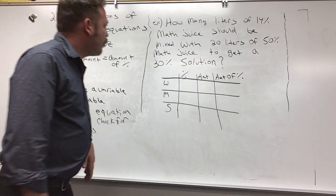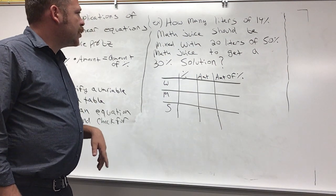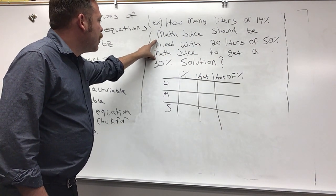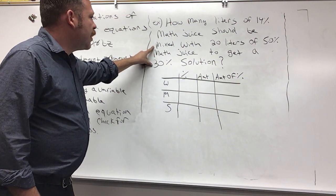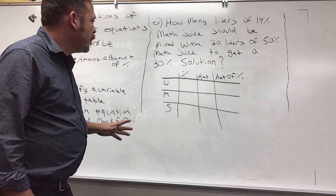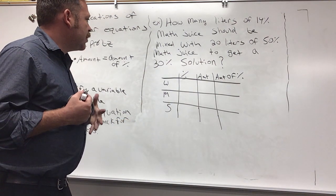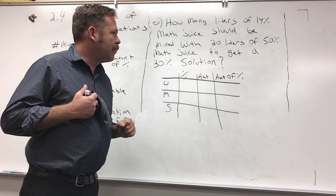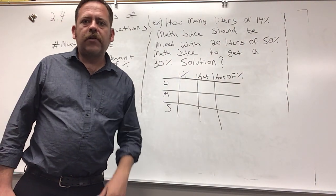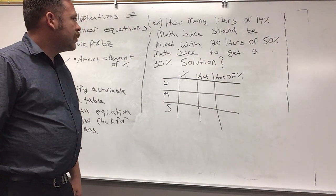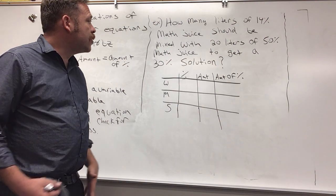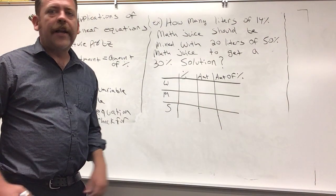Let's see what's going on in this particular example. How many liters of 14% math juice should be mixed with 20 liters of 50% math juice to get a solution that's 30% math juice? First off, let's figure out what's going on. This person's math juice is too strong.